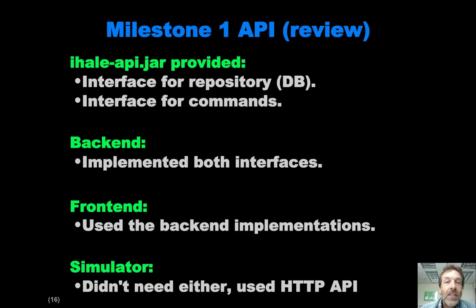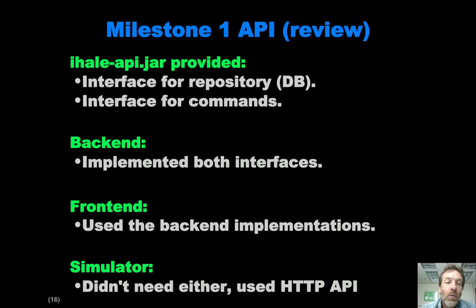In Milestone 1, the structure of the software was as follows: we had the iHale API JAR file, which essentially defined two interfaces — one for the repository that would provide the persistent store for state data, and a second for the commands that could be invoked by the front end on the back end, which would implement those commands by sending out HTTP requests to the various systems. There was a third interface for listeners as well. In Milestone 1, it was the responsibility of the back end to implement both of these interfaces, and the front end's responsibility to use them. The simulator basically focused on the HTTP API and didn't really need to deal with the iHale API JAR at all.